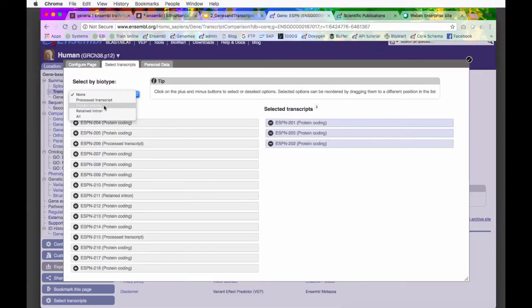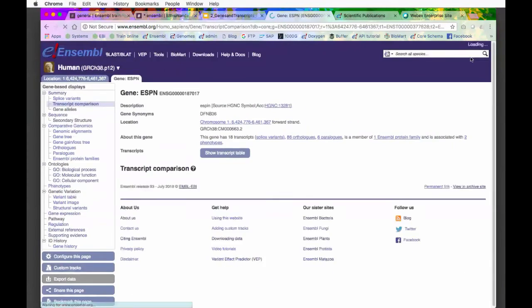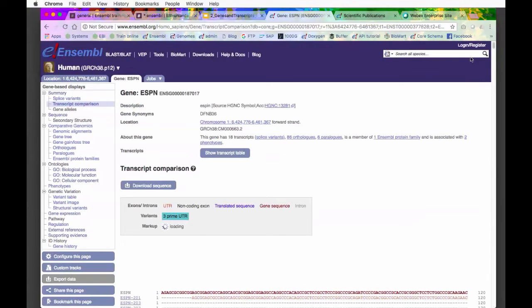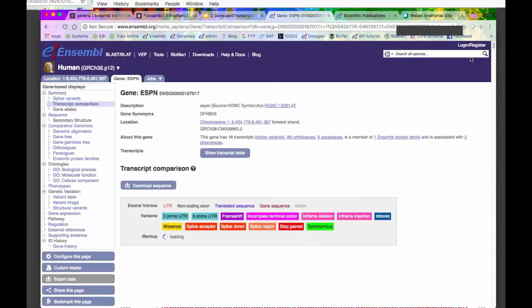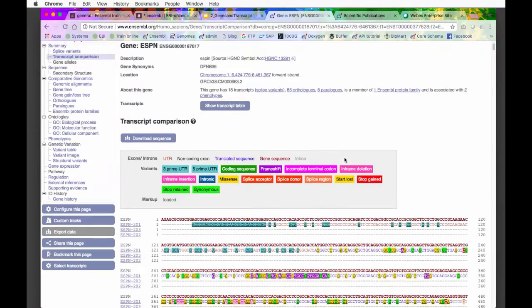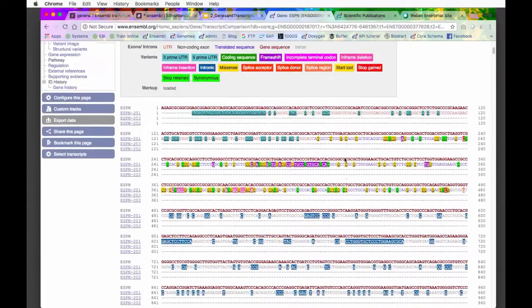I can also select all of the proteins, including all of the coding introns and stuff like that. But I'm just selecting the top three, and I'm going to say close. I think this is really useful for doing things like designing RT-PCR primers, because you can see which exons or which intron junctions are common to all the different transcripts and which ones are unique.